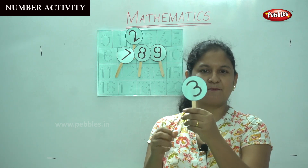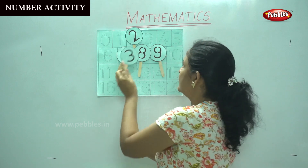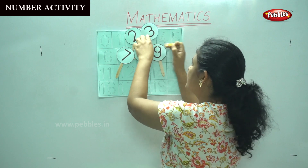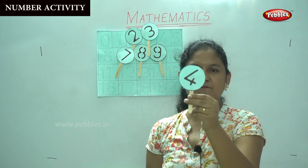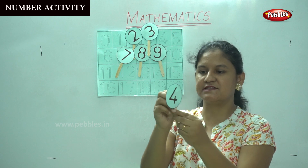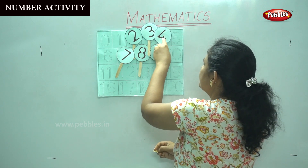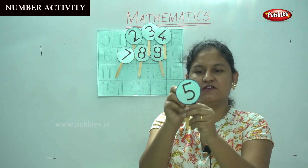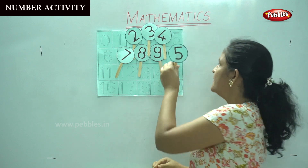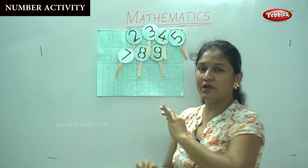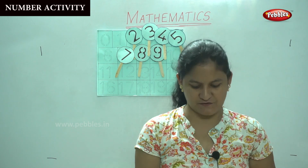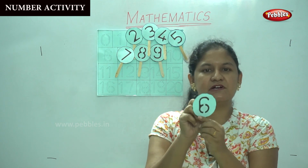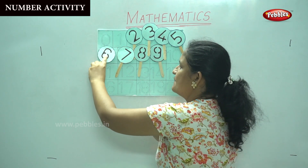So the next number is number 3. I'm placing number 3 in its place. Number 4 — this is number 4. Number 5 — I place number 5 after number 4. You can draw it very colourfully so that it will look very attractive. This is number 6. I place number 6.